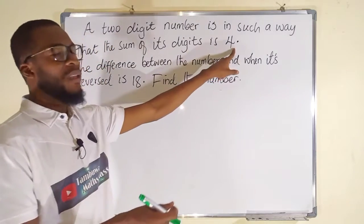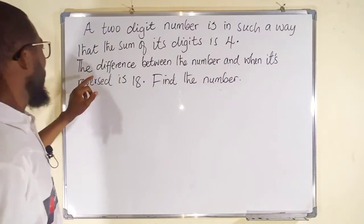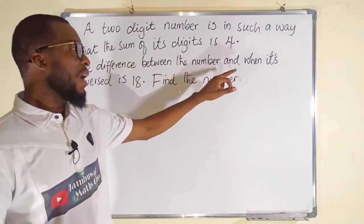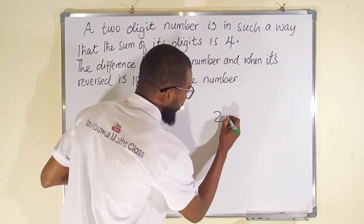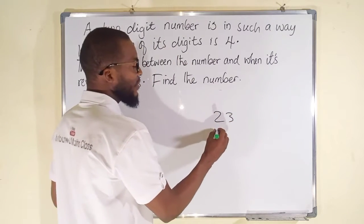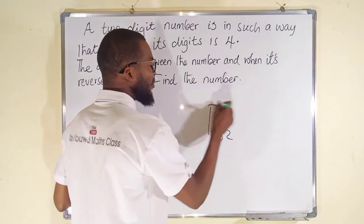And the difference between the number and when it is reversed is 18. Suppose the number is 23, the reverse form of 23 is 32, so the difference between these two numbers will be 18 if and only if this is the number we are looking for.